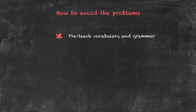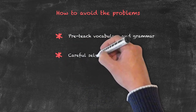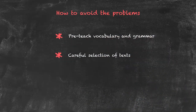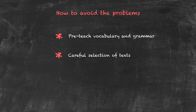Most of the materials we'll be using for both reading and possibly for listening will be what's called authentic material — in other words, a real piece of material from a newspaper or magazine that hasn't been created for a particular class. So we need a very careful selection of text in terms of what vocabulary is in there, what actual language is used, and also the way in which it's been written.